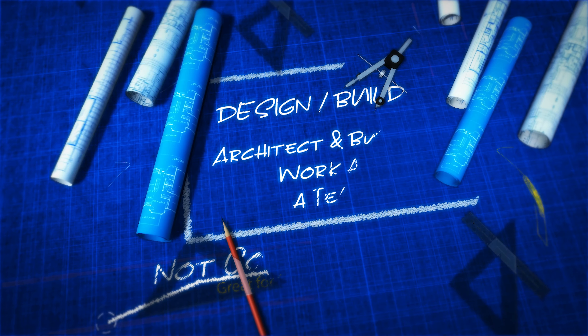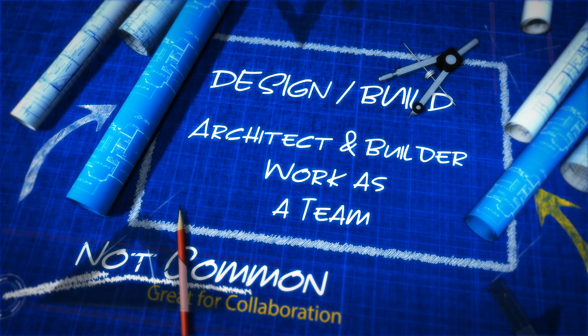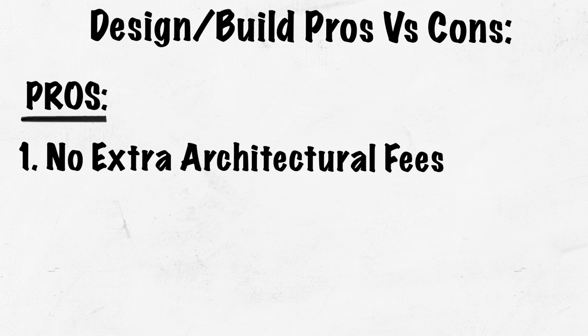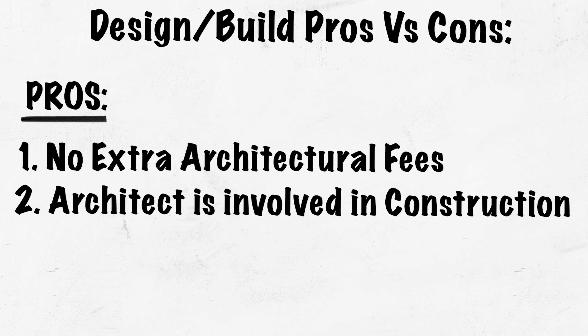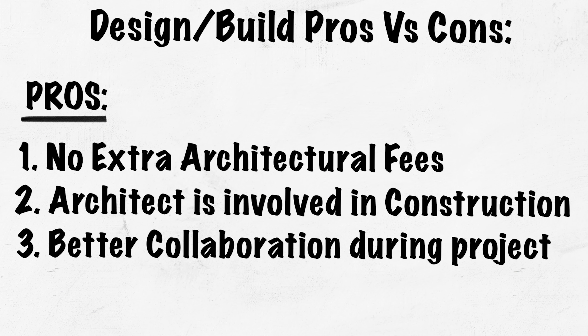Number two is the design-build team. One good thing about a design-build team is that the architect doesn't charge any additional money during construction — he helps the contractor as necessary and explains to the owner what needs to be done and why. There's a greater level of collaboration between the architect, builder, and homeowner. A lot of consultation that you would be charged for separately in the first arrangement becomes part of the overall construction cost in a design-build arrangement.